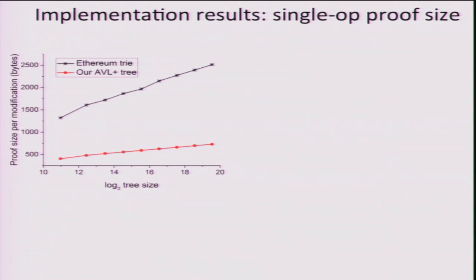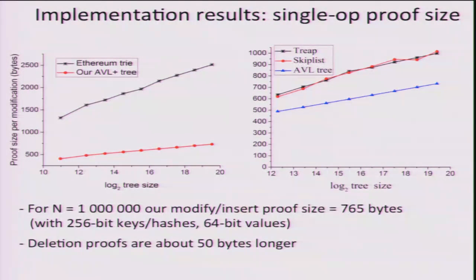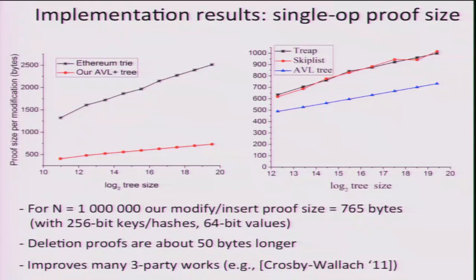I want to show you a little bit of implementation results. The upper line is the proof length for the Ethereum trie; the lower line is our proof length. On the Y-axis is the tree size on log scale from about 1,000 to about 1,000,000. We're three times more efficient than Ethereum proofs in terms of length, and Ethereum does not give you the ability to compute the new root while we do. We implemented a bunch of other data structures — tries and skip lists — and our line is the bottom one, performing better than all others. With about a million keys, your proof size is about 765 bytes at 128-bit security.